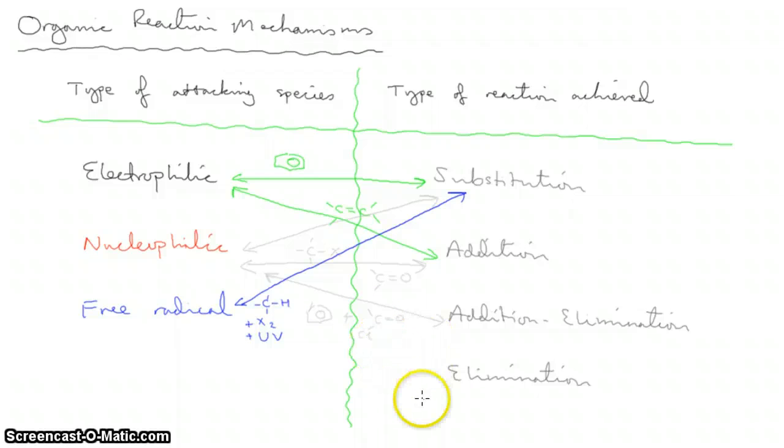Elimination reactions are only labeled as elimination. This would be, for example, removing water from an alcohol to make an alkene. That would be a prime example of elimination.